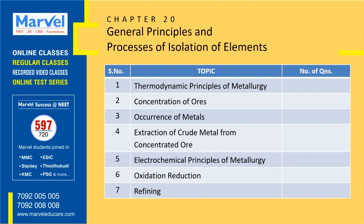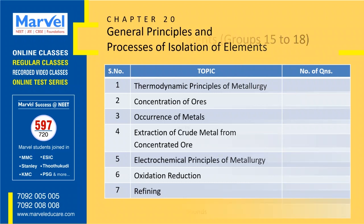Next: General Principles and Process of Isolation of Elements — total 12 questions, expecting 1 question from this chapter. The first two topics have 7 questions, and the remaining topics have 5 questions. If you prepare the first two topics, you can attend one question.